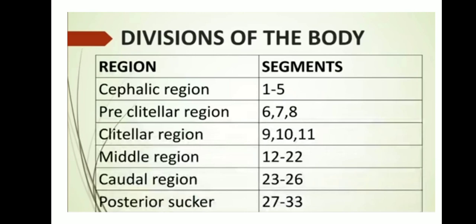We will now see the divisions of the body. The body of the leech is divided into 6 regions: the cephalic region (segments 1–5), pre-clitellar region (segments 6–8), clitellar region (segments 9–11), middle region (segments 12–22), caudal region (segments 23–26), and posterior sucker (segments 27–33). You must remember which segment belongs to which region.